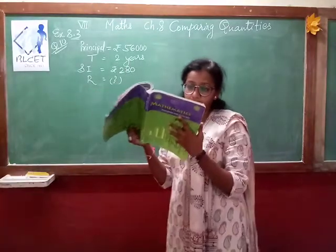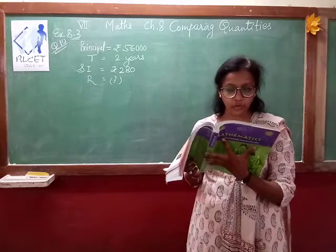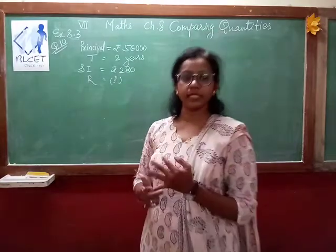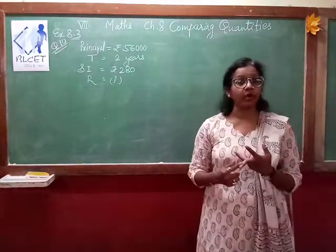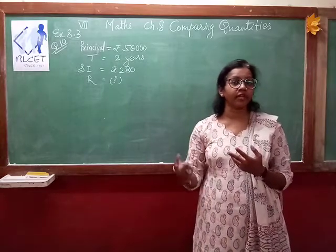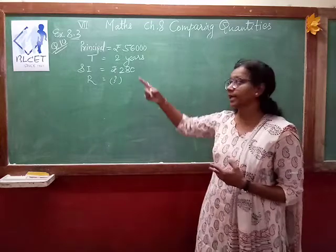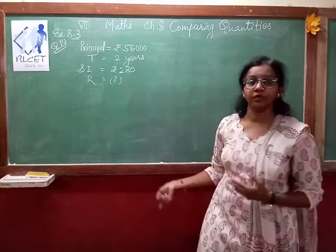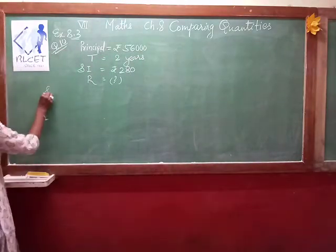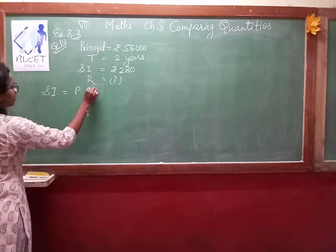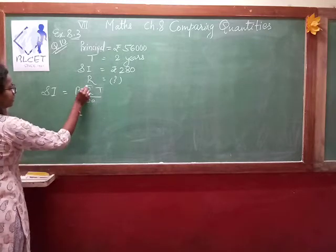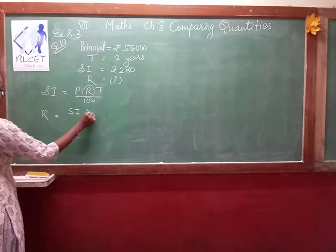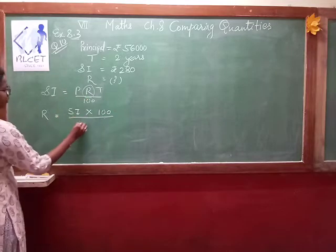Question number 10: What rate gives rupees 280 as interest on a sum of rupees 56,000 in 2 years? Here, what is given? Principal is given, simple interest is given, time is given. What do we want to find? Rate of interest. We will list out all the data. What is not given is rate — that we have to find. We know the formula: simple interest equals P times R times T divided by 100. We can make R the subject: R equals simple interest multiplied by 100 divided by P times T.